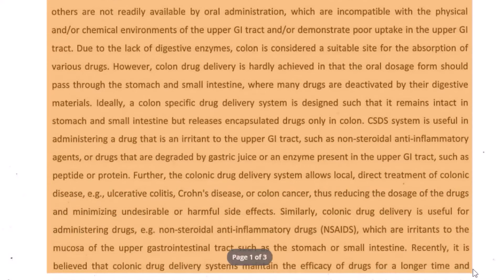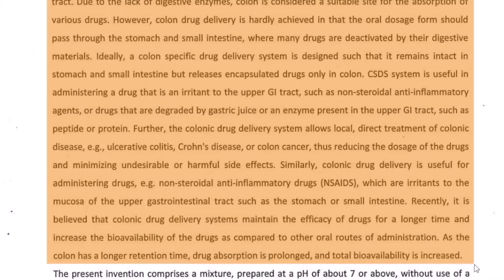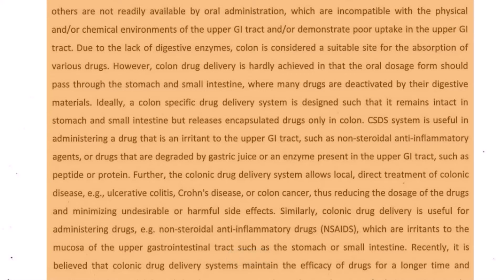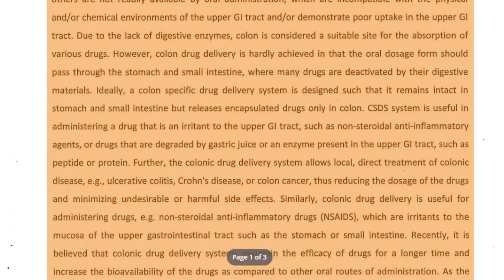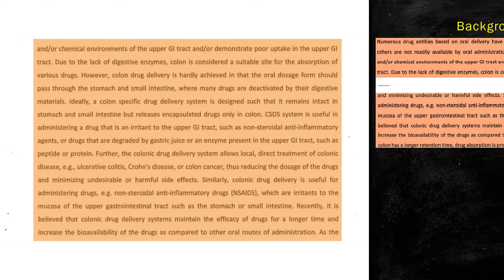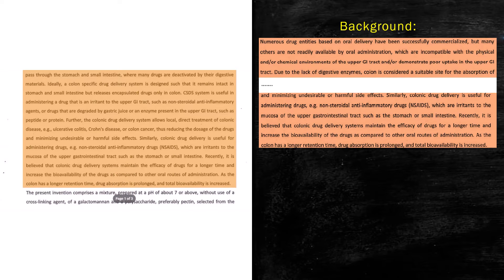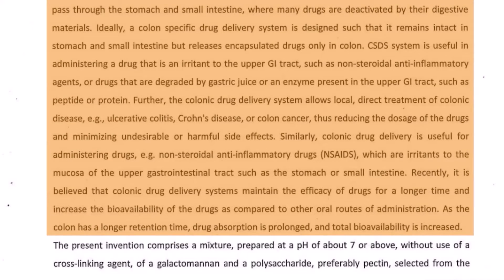So before they get into the present invention part, we can consider this entire section to be our background section. We end our background section by saying: 'There is therefore a need for an improved or effective drug delivery composition or pharmaceutical dosage or method for preparing thereof.'